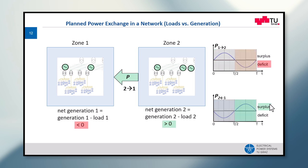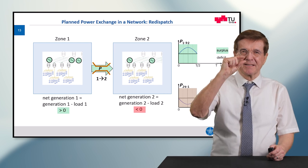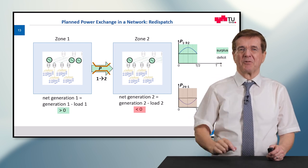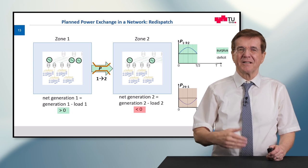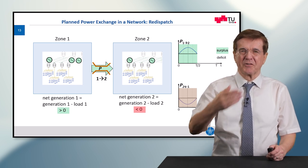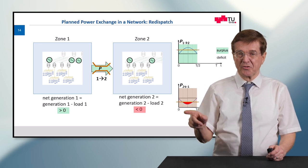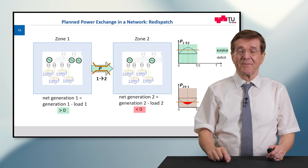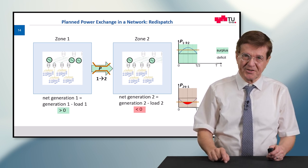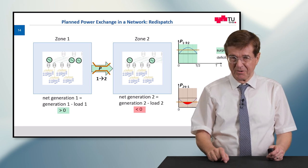Now let's assume that after a certain time this situation has turned around: there is a surplus in zone 2, a deficit in zone 1, and the power flow goes the other way. But what will happen if there is a limitation in the transfer of power? We call this a bottleneck. There is too little transport capacity for power and current, and this would mean a deficit in zone 2 which could develop into a crisis — requiring harsh measures like load shedding, which nobody wants.